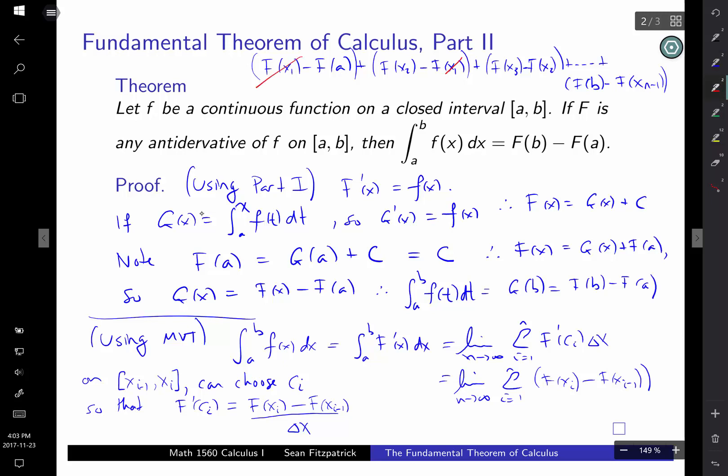And you keep going all the way down to the last one, which will be f of xn, but xn is b. And then you get n minus 1, right? But then we notice that, hey, this f of x1 cancels with that f of x1. That f of x2 cancels with that f of x2. The x3 is going to cancel with one there. That one, so everything cancels except for this term and this term.